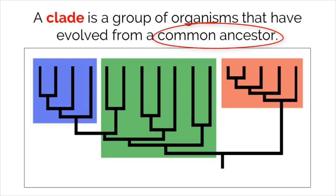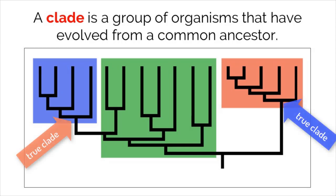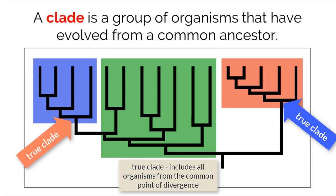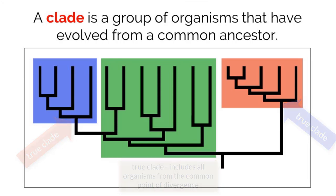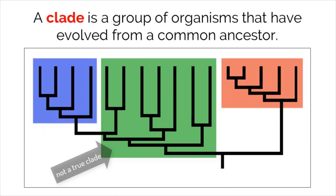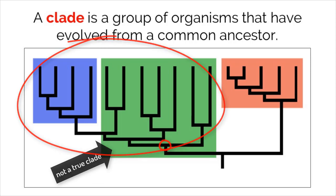Below there are three highlighted colors in this cladogram. The blue and red colors represent true clades because they highlight all organisms after the common point of divergence. What is shown in green, however, is not a true clade because it does not take into account all organisms that arise after the common point of divergence. From this point, the true clade would include all of the following branches.